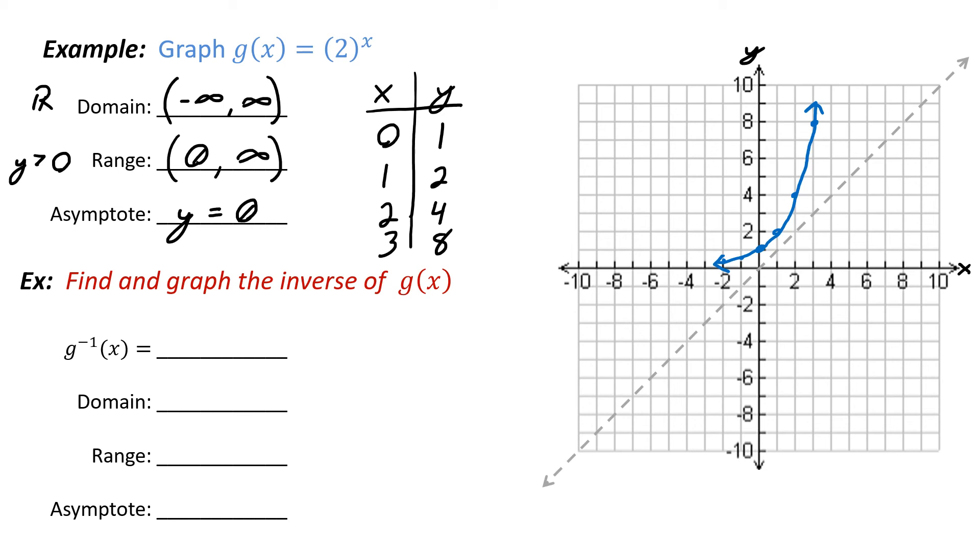All right next, let's find the inverse of g of x. So the inverse is going to be a log function. What I could do is go through the steps: y equals 2 to the x power, switch the x and the y, so 2 to the y power equals x. And then I could apply one of the previous properties: log base 2 of 2 to the y power equals log base 2 of x. And this cancels out so we're left with y equals log base 2 of x.